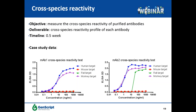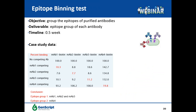Epitope binning is another useful characterization tool for lead selection, where antibodies are grouped by their binding epitopes on the antigen. Antibodies binding to different epitopes may have distinct binding modes, mechanisms of efficacy, safety concerns, and drug developability. In this case study, competitive ELISA was used to group the epitopes of four antibodies in a checkerboard format. Unlabeled MAb1 competed with biotin-labeled MAb1, as expected for self-validation. MAb2 and MAb3 also efficiently competed with MAb1, showing they probably bind to the same epitope.